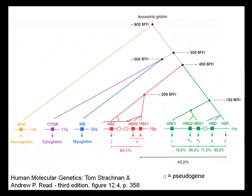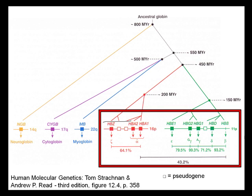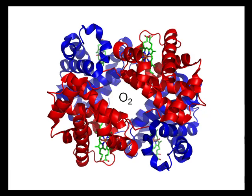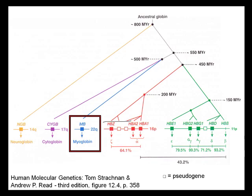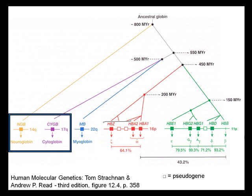Globins are proteins that bind oxygen and are therefore very important in the respiratory system. Hemoglobin, here shown in green and red, is a well known and well studied example. It is the protein responsible for the oxygen binding property of blood and is found in red blood cells. Myoglobin also serves as an oxygen transporter in muscle tissues. And then there are neuroglobin and cytoglobin. Although the function of cytoglobin has remained obscure since its recent discovery, both cytoglobin and neuroglobin share a homologous relationship with hemoglobin and myoglobin.